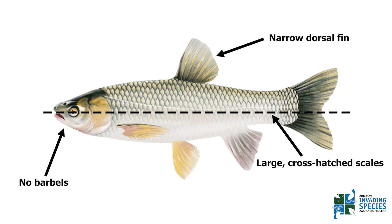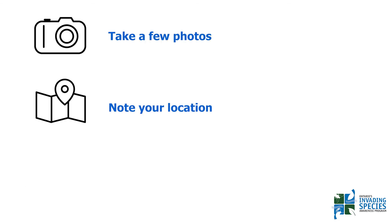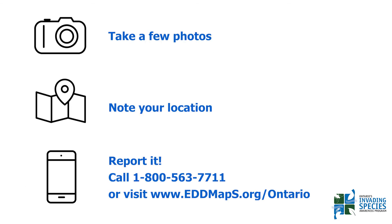Their eyes are in line with the middle of their body and their slightly flattened head ends in a toothless, jawed, terminal mouth. If you see a fish that you suspect is a grass carp, take a few good photos, note your location and report it by calling the Invading Species Hotline at 1-800-563-7711. Or you can submit your report online by visiting edmaps.org/Ontario.